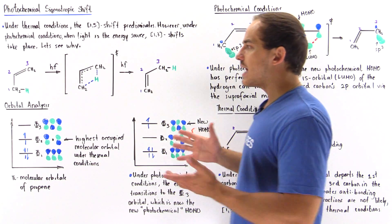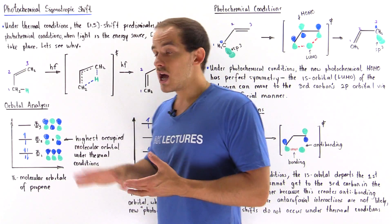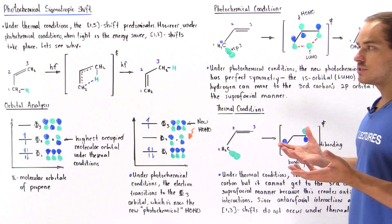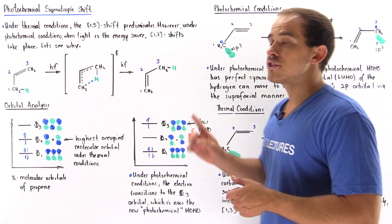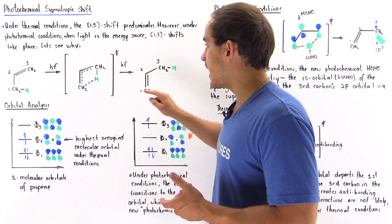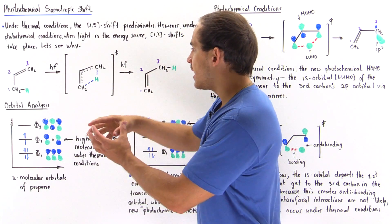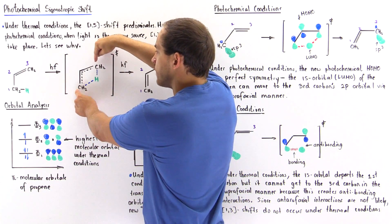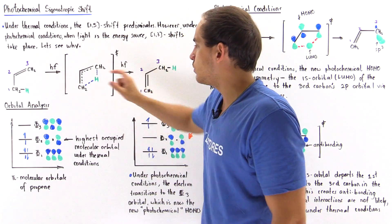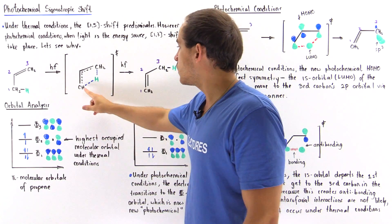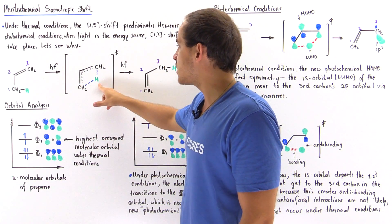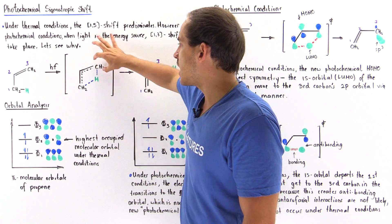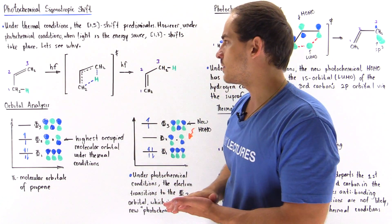Now what exactly does the transition state of this reaction look like? Basically, the transition state is the same as in the thermal case, except in this case this H atom migrates in the middle of the area between the first and the third carbon, and we have a partially broken bond between the carbon and H atom here, and a partially formed bond between the H atom and this carbon here.